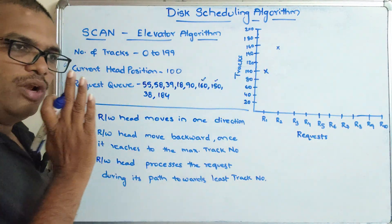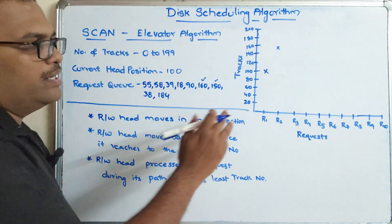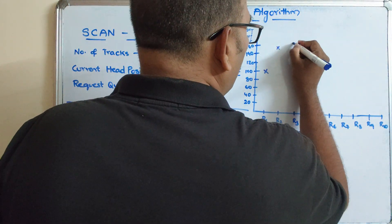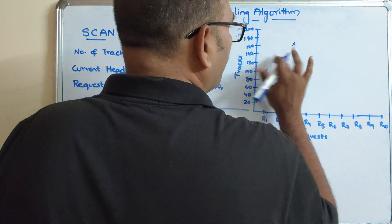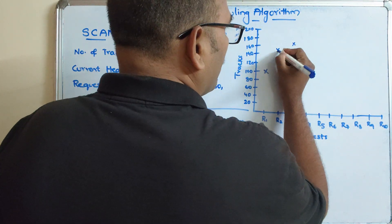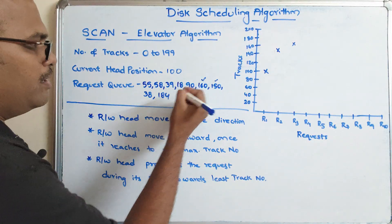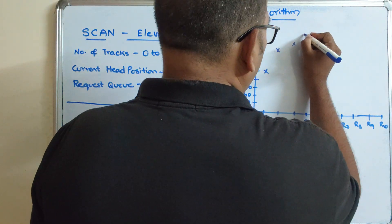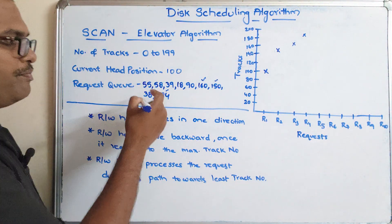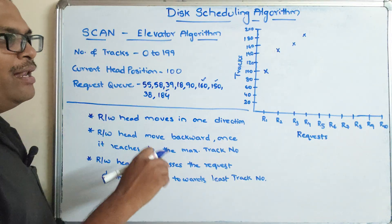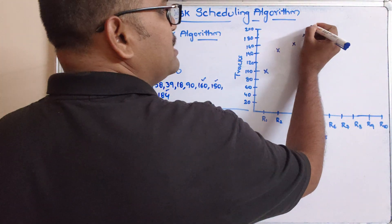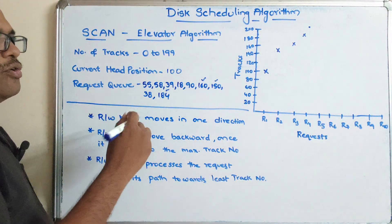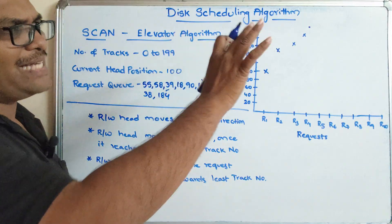The read/write head is at 100, so it will only move forward. From 100 to 150, 150 to 160 — the third request is at 160. Then 184 forward, so request R4 will be 184. Then it reaches 199, so it reaches the maximum number, which is the last track.